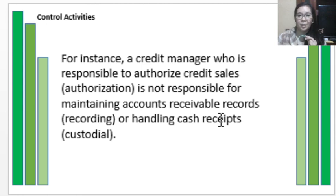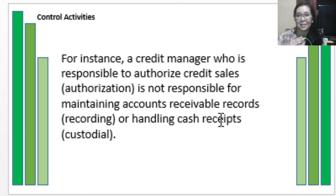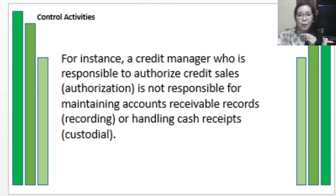For instance, a credit manager responsible for authorizing credit sales should not be responsible for maintaining accounts receivable records, recording transactions, or handling cash receipts. If all three responsibilities were handled by one person, cash would be highly susceptible to theft — and any theft could be concealed because only one person handles, records, and authorizes those transactions. That is why separation is very important. Those are our control activities.